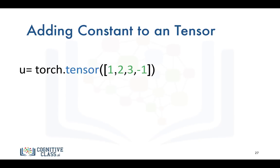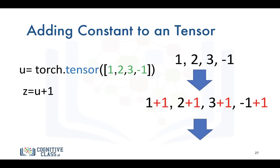We can also add a constant term to a tensor — this is called broadcasting. We have tensor U, and we add 1 and assign it to tensor Z, which simply adds 1 to every element in the tensor. This can get pretty complex, so in the notebook I've included a link to a cool tutorial for NumPy that should help.